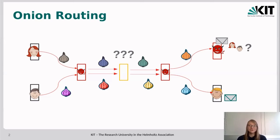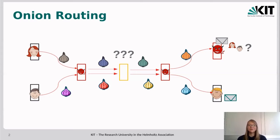It is really important that we get this unlinking of the onions before and after the honest relay right, and therefore we are interested in constructing a secure onion routing packet format. A packet format can only prevent linkings of onions that are based on the packet itself. There are more dimensions like the timing of the onions or traffic patterns that are important in practice, but they cannot be solved with a packet format and are instead orthogonal concerns with orthogonal measures that can be applied.